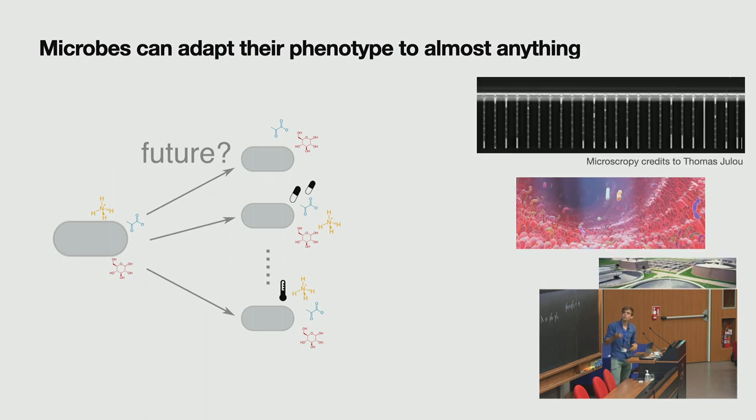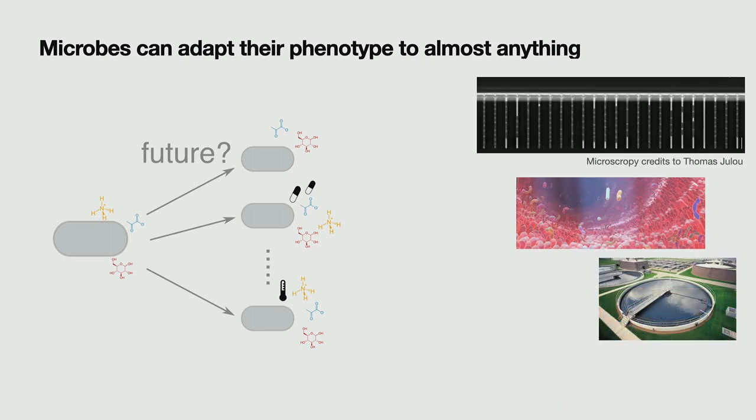And somehow these microbes can still adapt. And for example, if we look at our favorite E. coli, we can grow it in the modern machine as they do in our lab. They can grow in the gut and they can grow in wastewater plants. It's quite a diverse spectrum already.